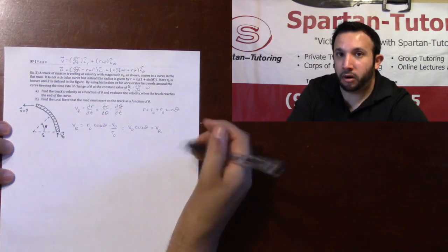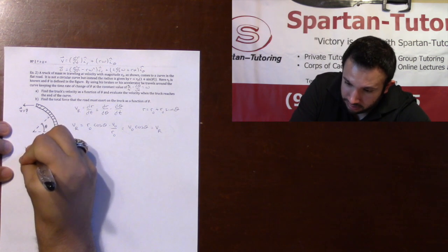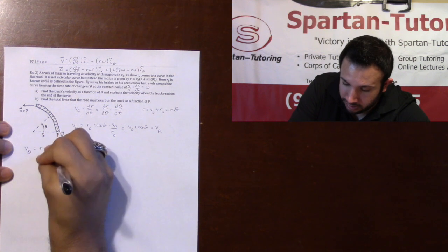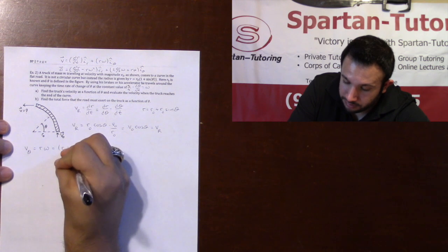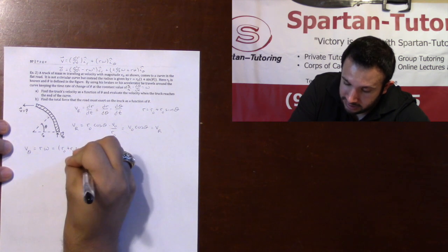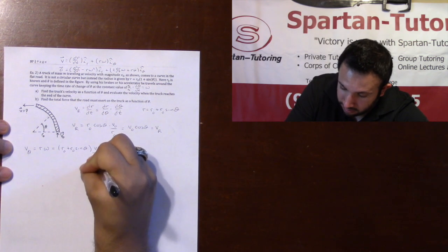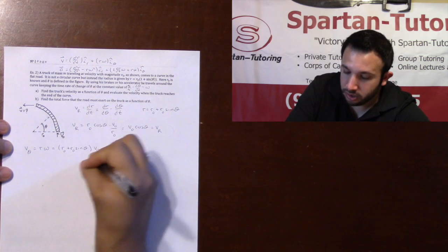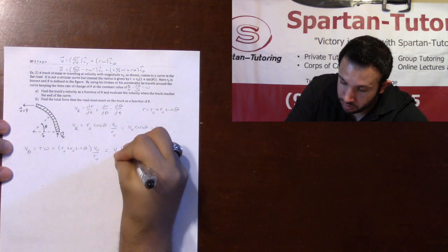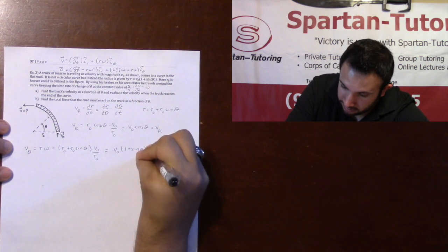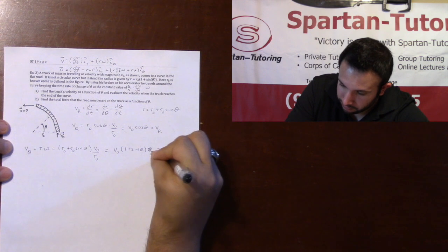Now that I have v-r, I need v-theta. v-theta, which is equal to r times omega, is equal to — where your r is r-naught plus r-naught sine theta — and our omega is v-naught over r-naught. Notice how all the r-naughts cancel. So this will be v-naught times 1 plus sine theta. And this equals your v-theta.